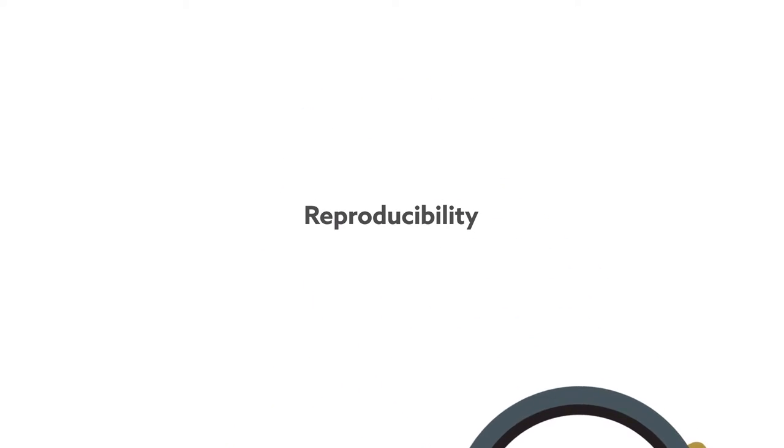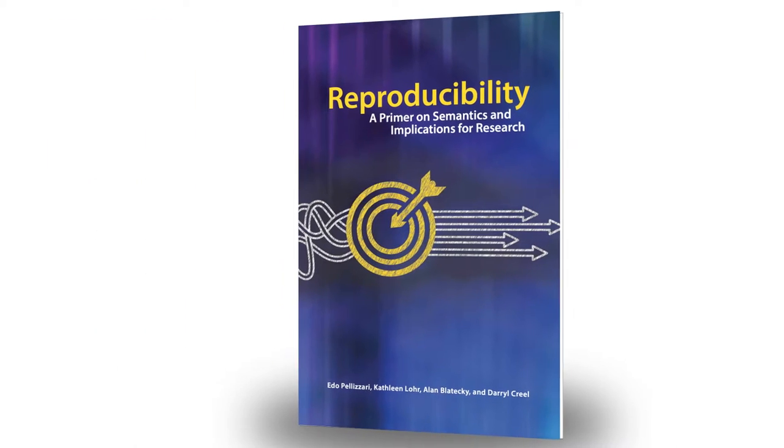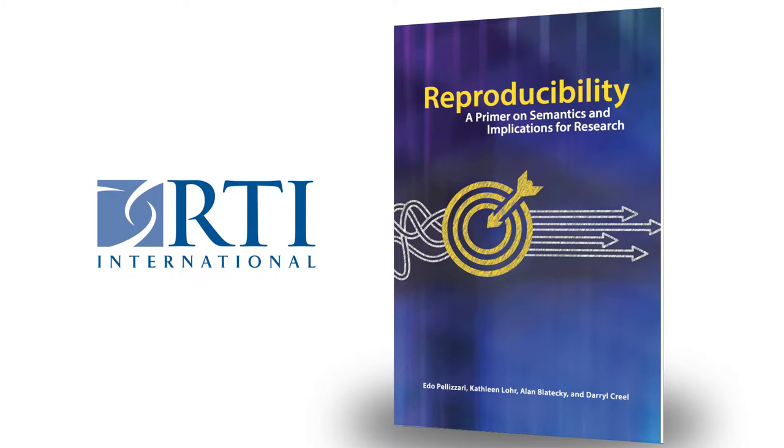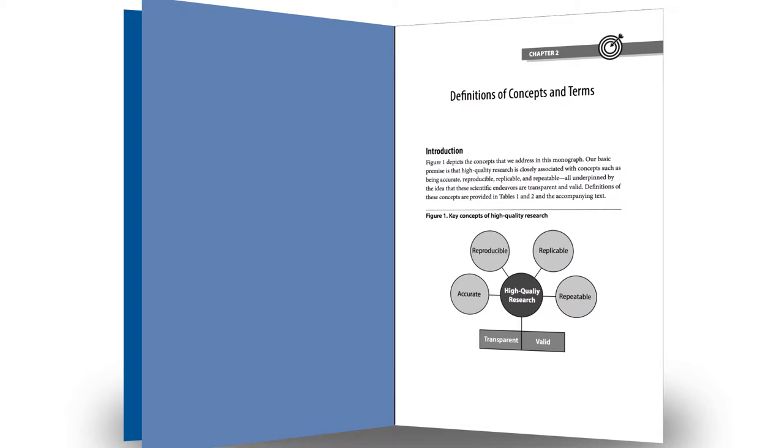To clarify matters and bring you up to speed on this critical topic is a new book from RTI International called Reproducibility – A Primer on Semantics and Implications for Research. It offers readers a comprehensive set of definitions related to reproducibility and a guide to thinking about these ideas.